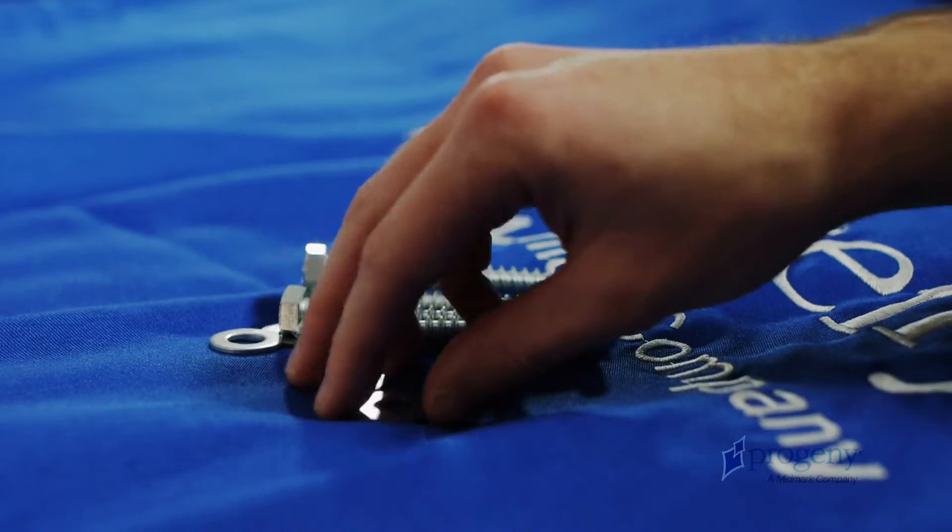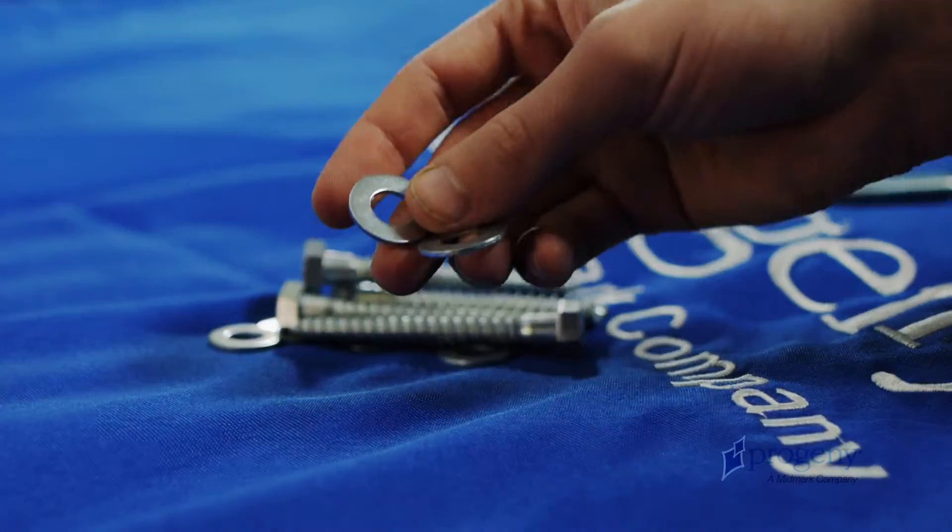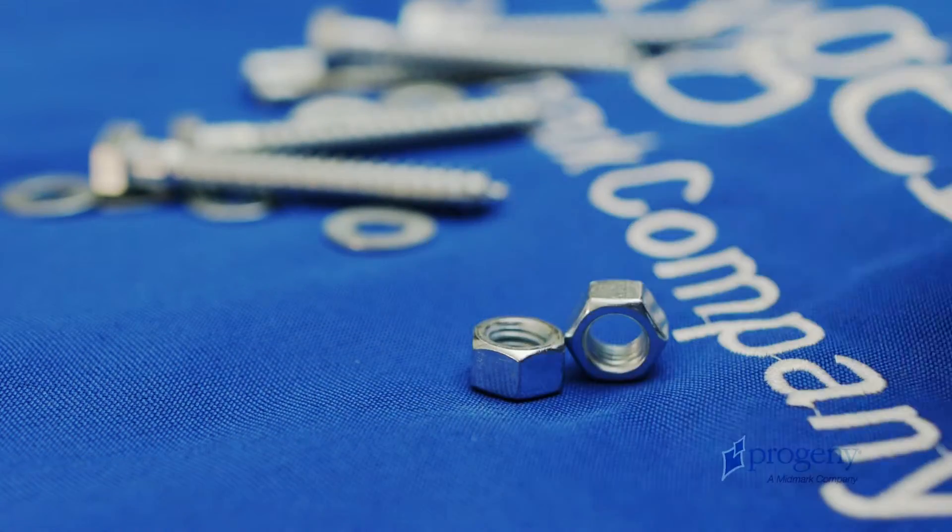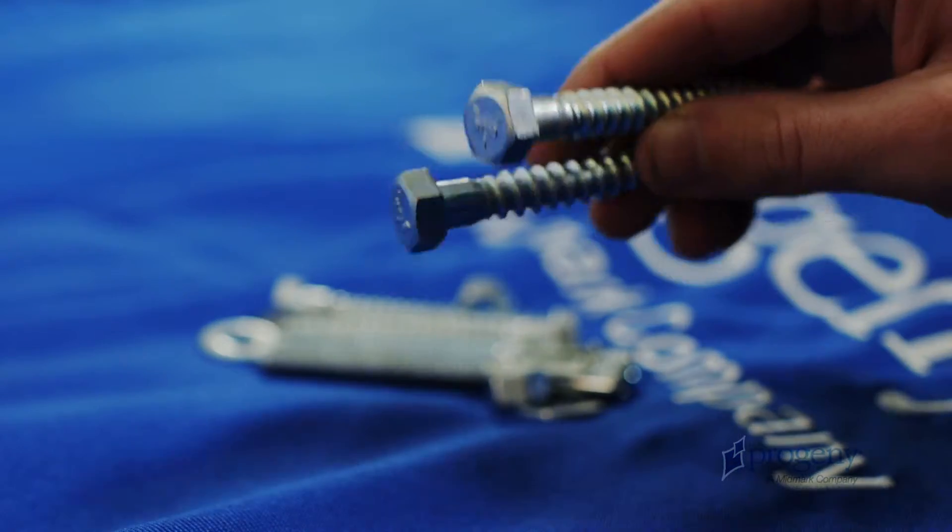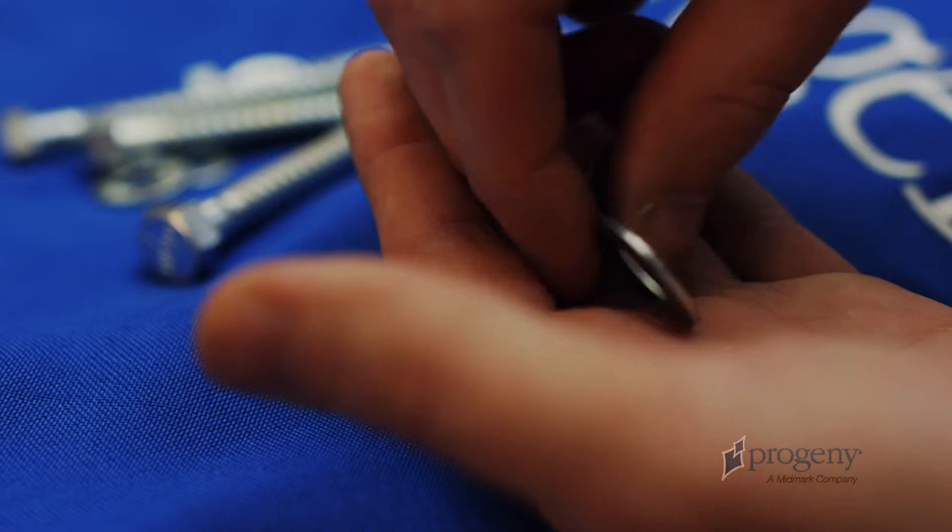Select two cement anchors, two washers, and two nuts from the hardware kit. For wood floors, select two lag bolts and two washers.